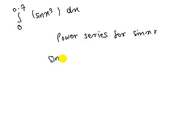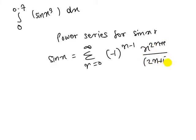Here sine x equals sigma n equals 0 to infinity, minus 1 raised to power n, x to the power 2n plus 1, over 2n plus 1 factorial.